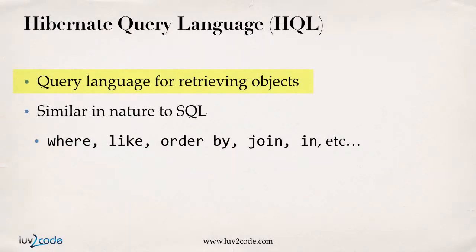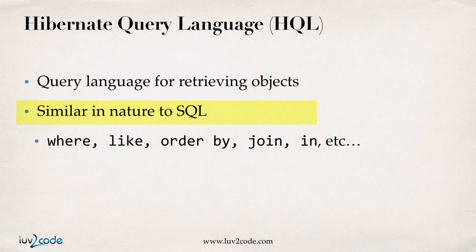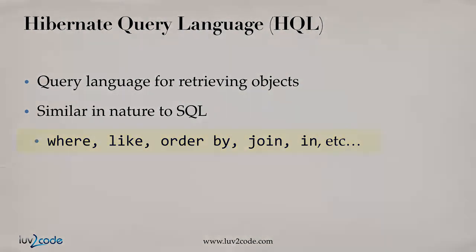Hibernate has a query language for retrieving objects. It's very similar in nature to SQL. In the Hibernate world, they call it HQL — Hibernate Query Language. You get to query using where, like, order by, joins — all the normal stuff you'd normally see in SQL. I'll show you some examples of using the HQL language.